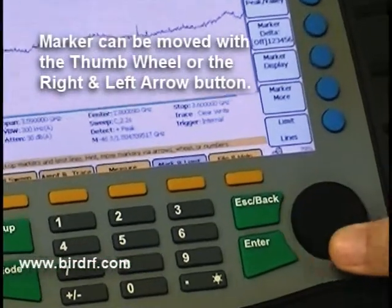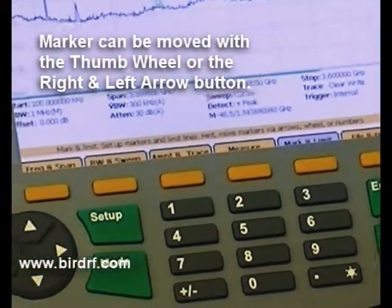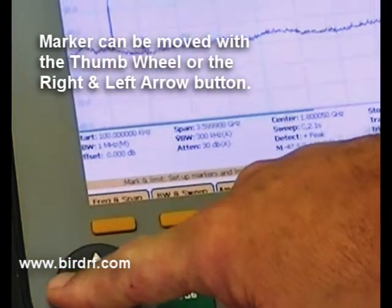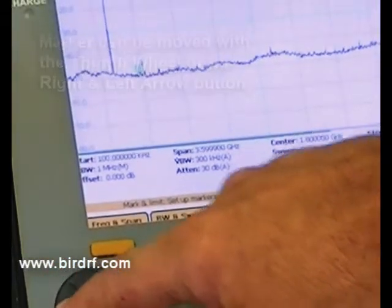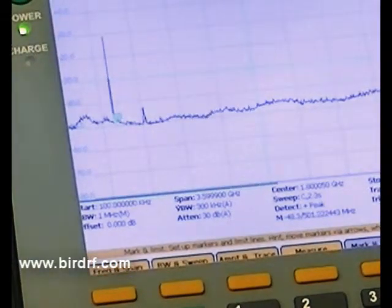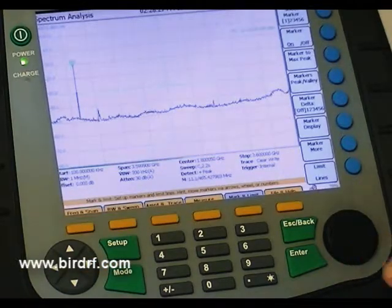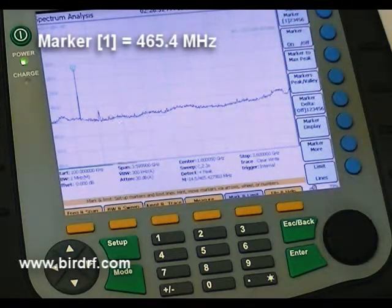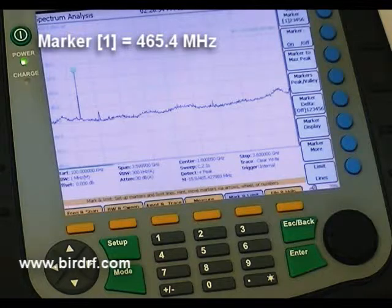If I use the thumb wheel and rotate it to the left or the right or left arrow keys, I can move my marker to my desired signal. It also displays up in this corner that I'm at about 465.4 MHz.